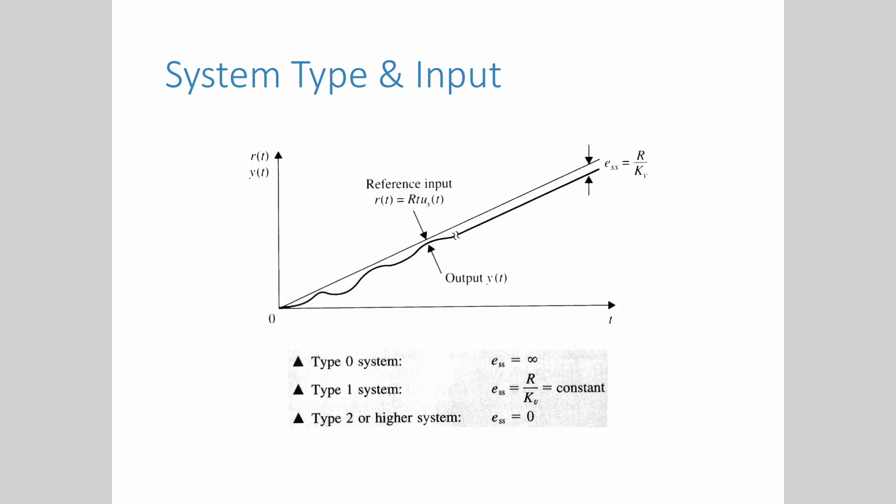As for ramp input, type 0 system will always have infinity steady state error where the output will constantly diverge from the input. Type 1 on the other hand will yield a finite value steady state error, and finally type 2 and higher will yield 0 steady state error.